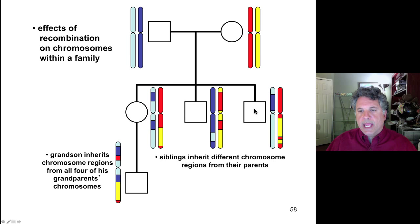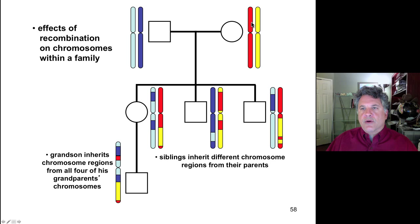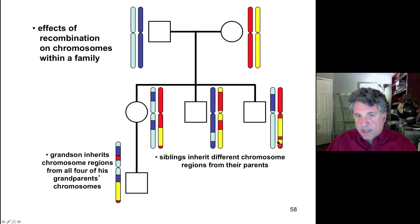Taking one offspring female and looking at her grandson, she would also exchange genetic material during meiosis between homologous chromosomes such that the grandson inherits from his mother a chromosome containing genetic material originally present in all four homologous chromosomes of the grandparents. These grandparents themselves have inherited recombinant chromosomes from their own parents. In this thought experiment we paint chromosomes uniformly at one generation to schematically follow what recombination does in terms of reshuffling genetic material.